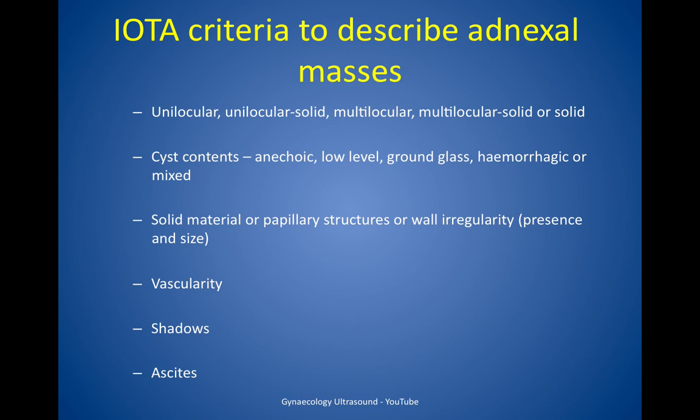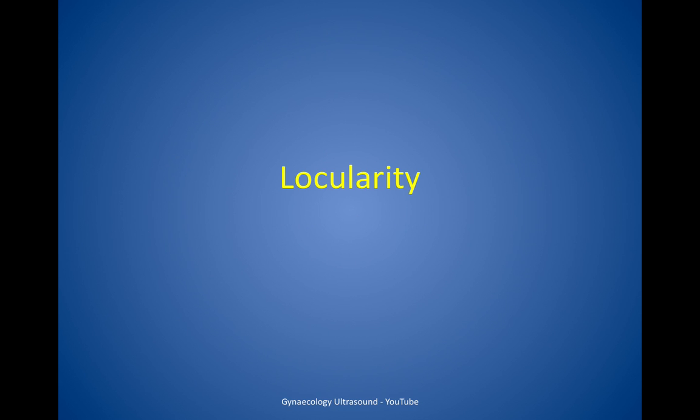The cyst contents are described as being anechoic, low level, ground glass, hemorrhagic or mixed. You then describe whether there is any solid material or papillary structures or wall irregularity, any vascularity, and note any shadowing and ascites.